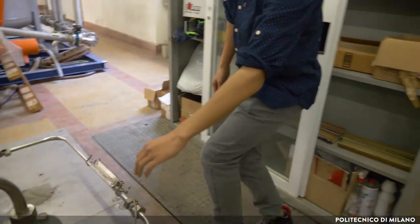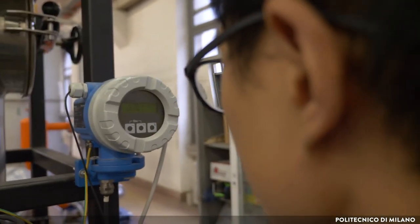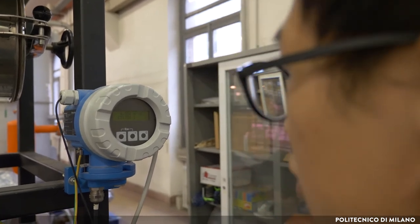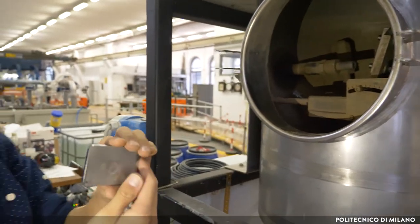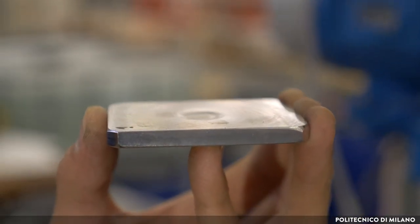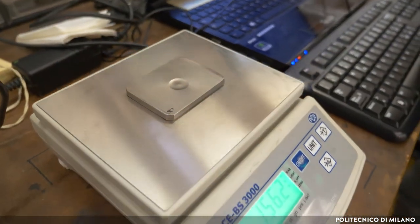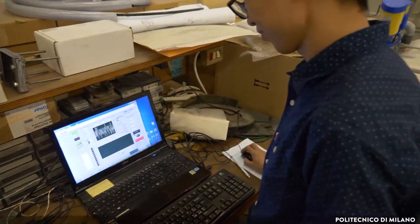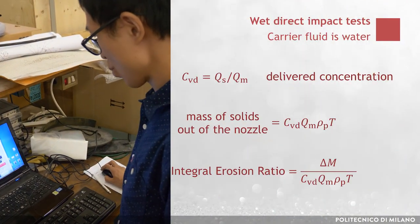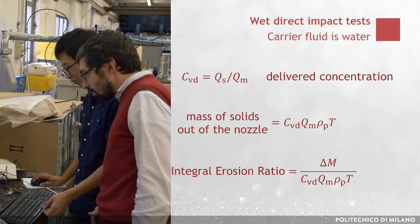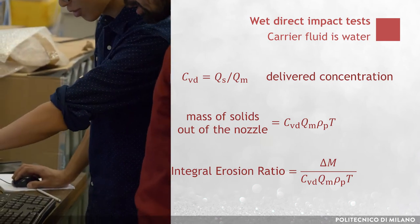An ultrasonic flow meter is used to measure the slurry flow rate QM during the test. At the end of the test, the damaged sample is removed from the support and its final weight determined using a balance. The difference between the initial and the final weight yields the mass removal from the sample ΔM. The integral erosion ratio is finally calculated as the ratio between ΔM and the product CVD times QM times ρP times T.